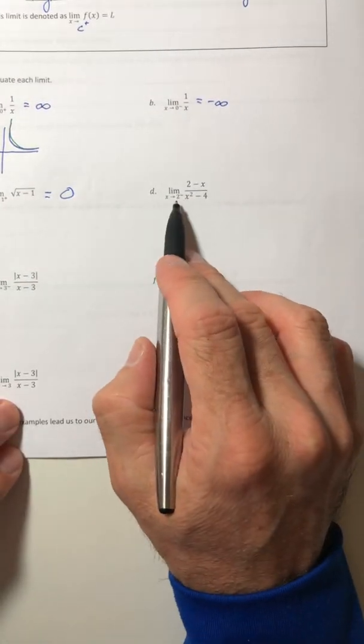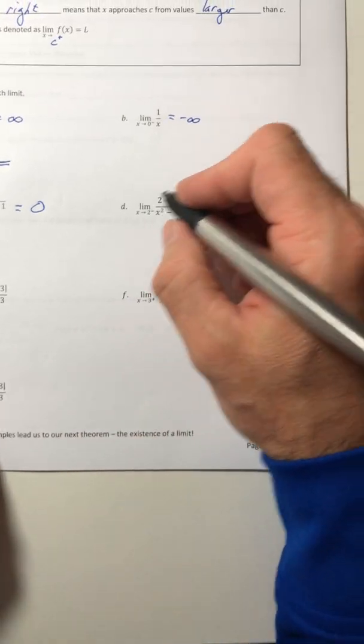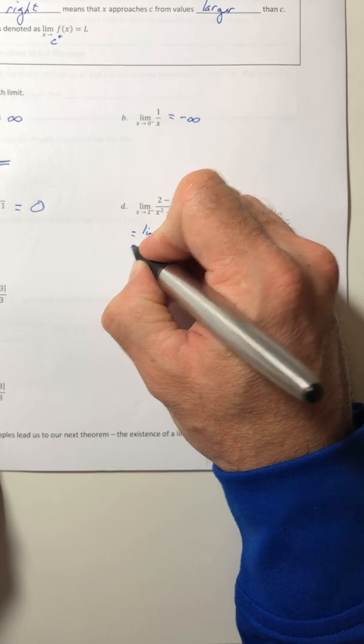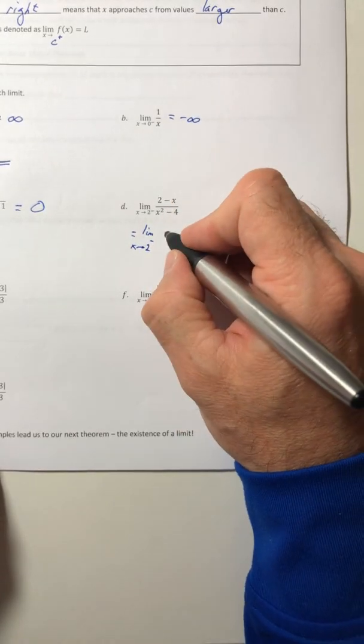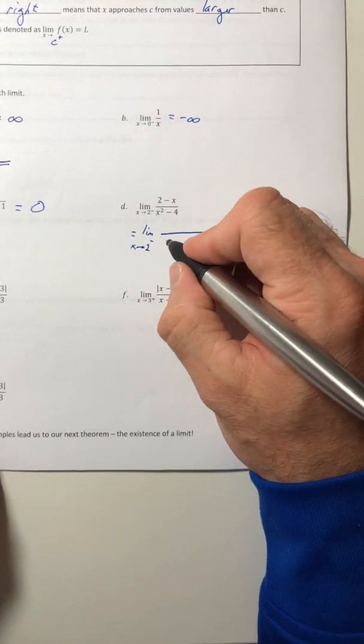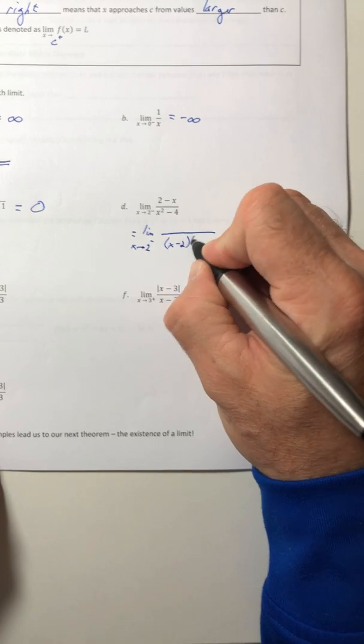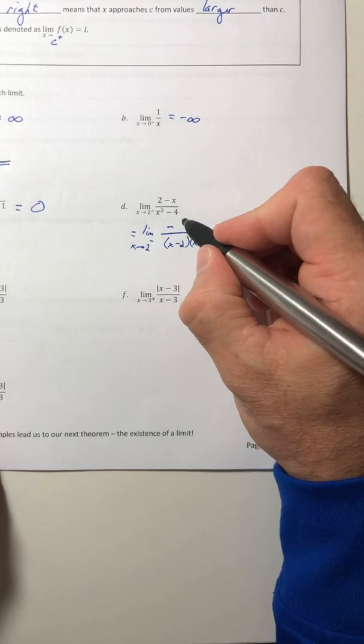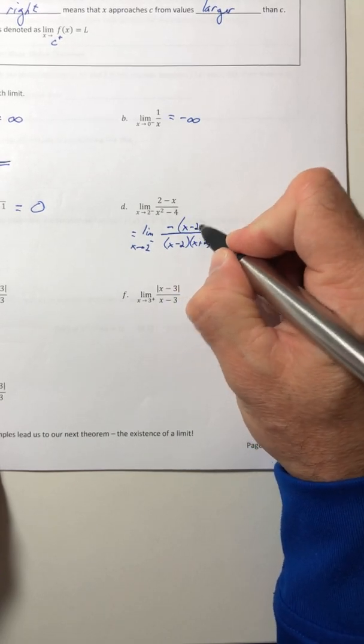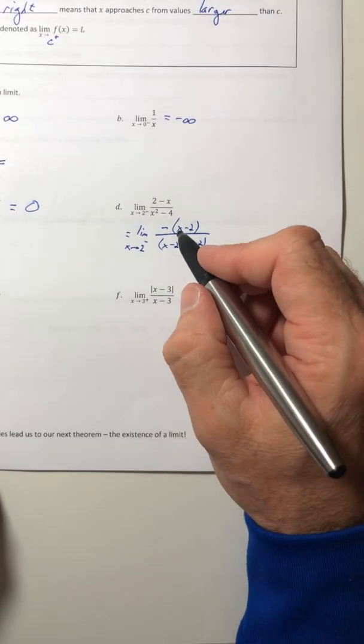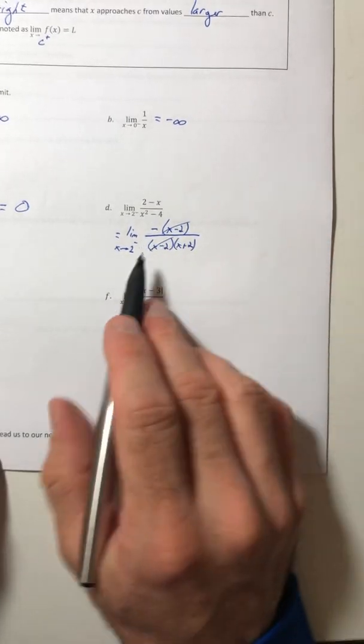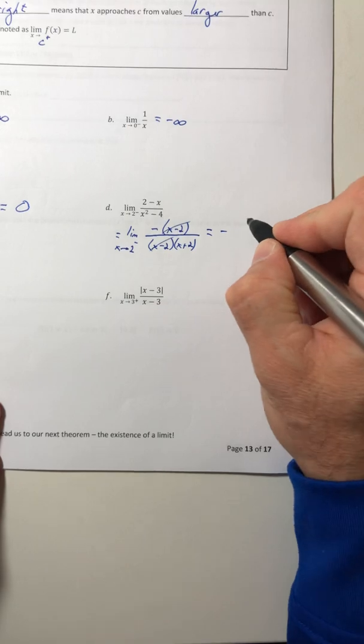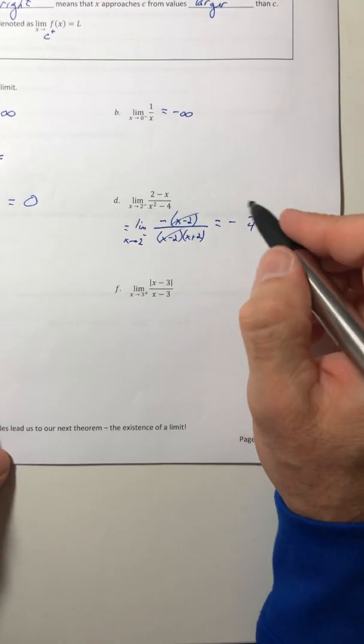Part D, you can't plug in the two. So let's manipulate it. So I'm going to factor the denominator. And then in the top, I'm going to factor out a negative one. So now your X minus twos cancel out. Now you can stick in the two. And for X, you get a negative one fourth.